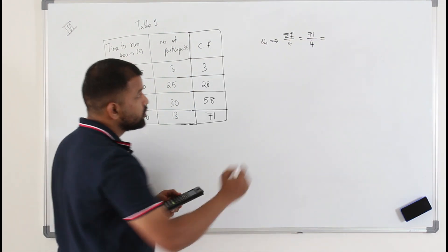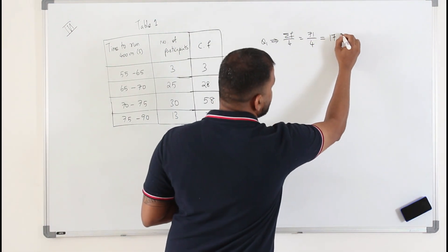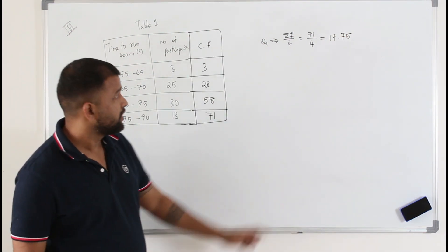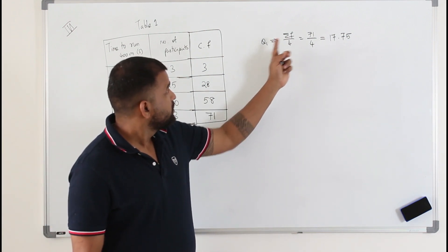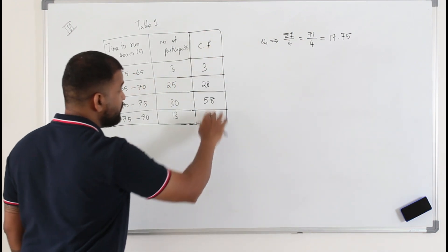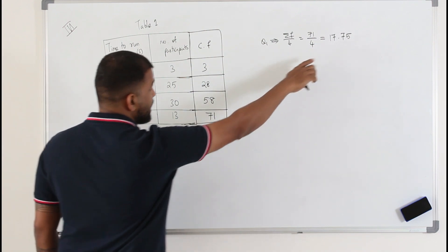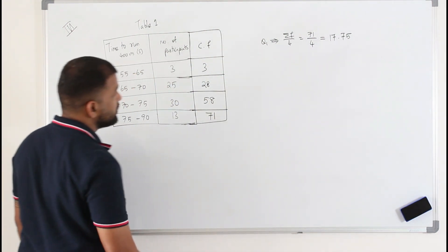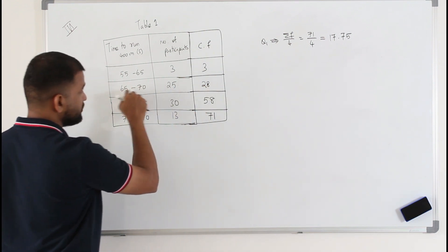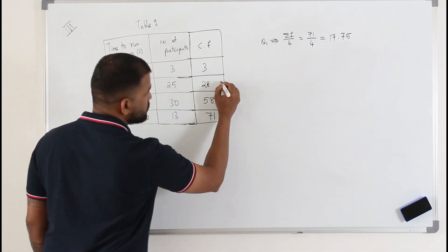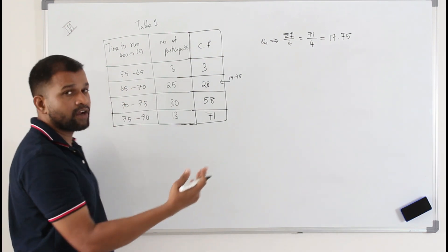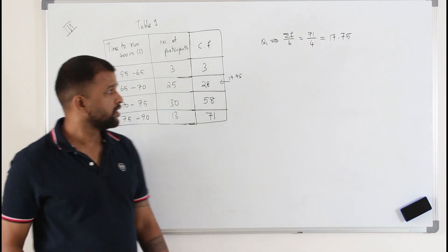71 divided by 4 gives 17.75. Listen carefully — we are going to apply the linear interpolation method. We got Σf/4 = 17.75. Now look at the cumulative frequency and check where this value lies. Anything more than 3 up to 28 lies in that class interval, so 17.75 lies in there. Taking that class interval, we are going to find Q1.